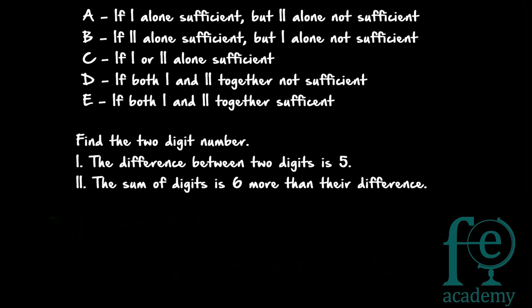The options given are A to E. Option A: if statement one alone is sufficient but statement two alone is not sufficient. Option B: vice versa — if statement two alone is sufficient but statement one alone is not. Option C: if either statement one or statement two alone is sufficient. Option D: if both statements one and two together are still not sufficient. Option E: if by using both statements one and two together you are able to get the answer.